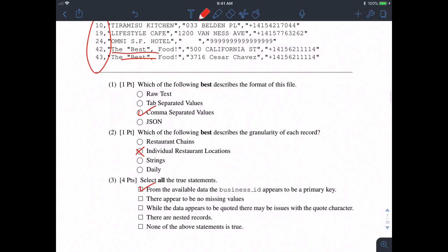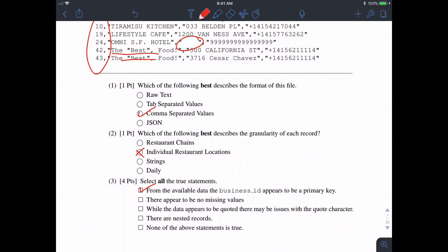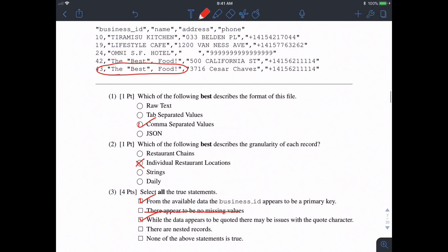The statement 'there appears to be no missing values' is false because there's a missing value right here. However, 'while the data appears to be quoted, there may be issues with the quote character' is true. If you look at the name here, 'Best' is quoted within the quote, which might cause issues when parsing in Python. Are there nested records? It doesn't appear so. The correct options were the first and third.